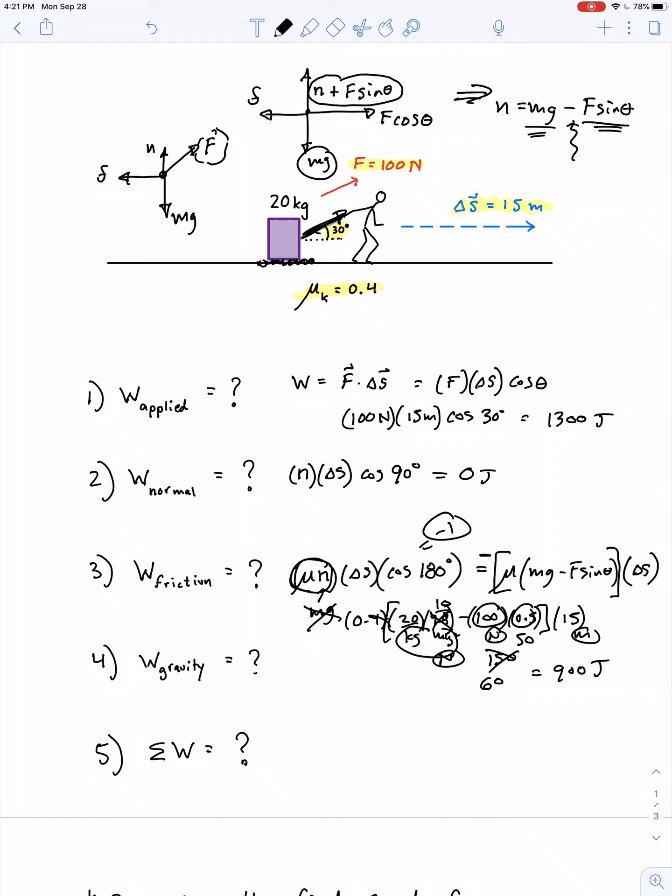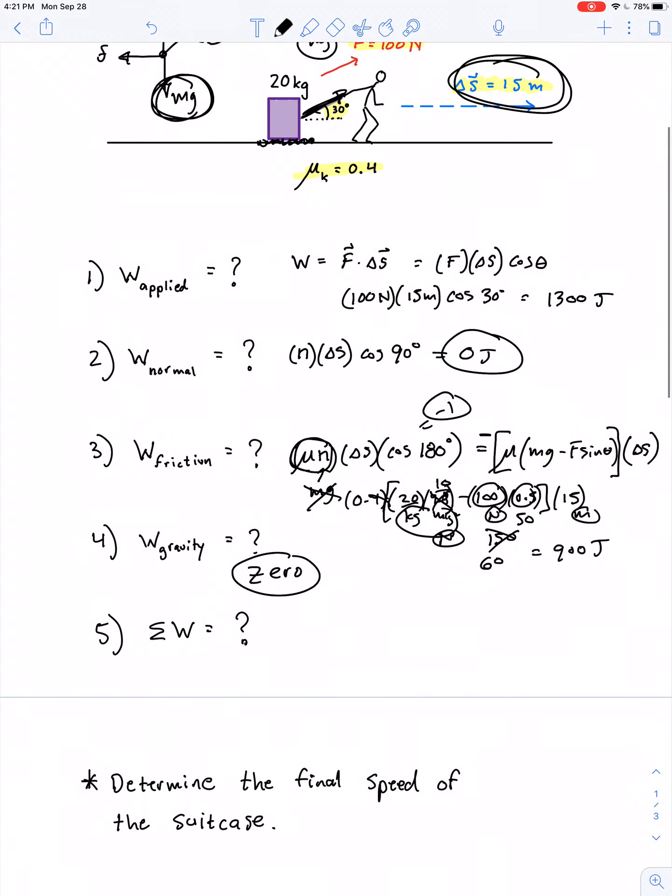Work done by gravity, I think you can argue that that's 0 in the same way that work done by the normal force was 0, because the angle between the force of gravity and the displacement is an angle of 90 degrees. So the net amount of work, well, we can just find it.